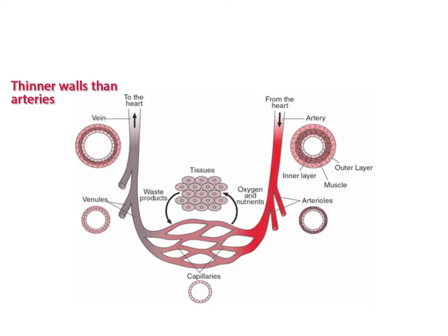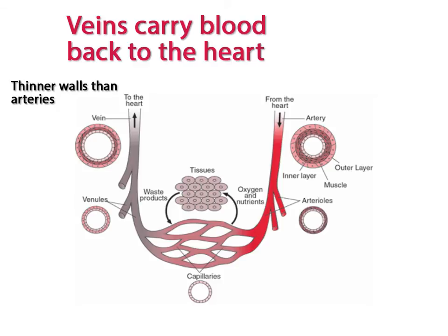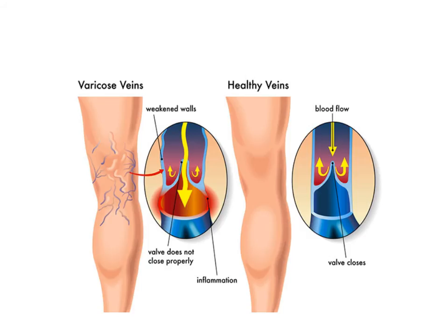Compared to the arteries, veins have thinner walls. As the function of veins is to carry blood back to the heart, they are furthest away from the strongest force of blood being pumped out of the heart, and therefore are not under such high blood pressure. Veins also have one-way valves to prevent blood from pooling in the extremities, as blood is moved back to the heart against the force of gravity. Muscle contraction also helps the veins to push blood back toward the heart.